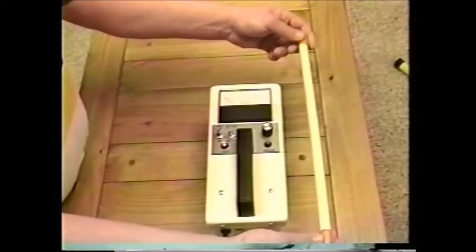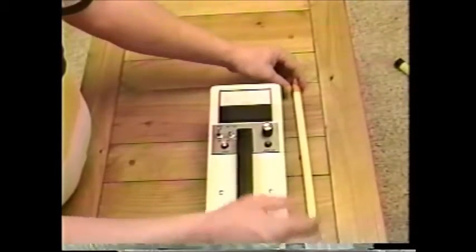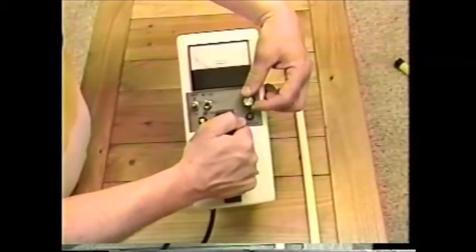The electrodes are spaced to test six inches of fiberglass at a time. To verify the tester is operating properly, a test bar is included. This is not for use in calibrating the unit, only for verifying that the unit is operating properly.